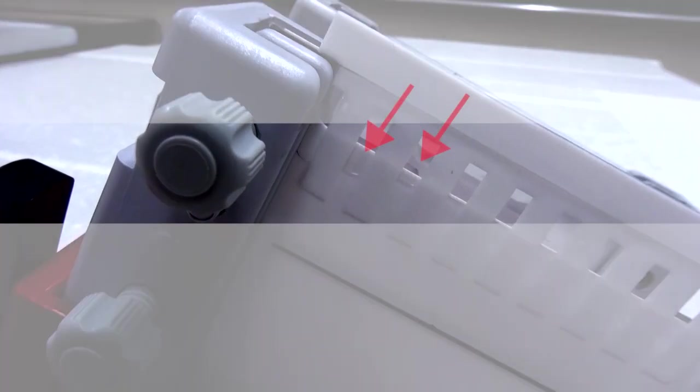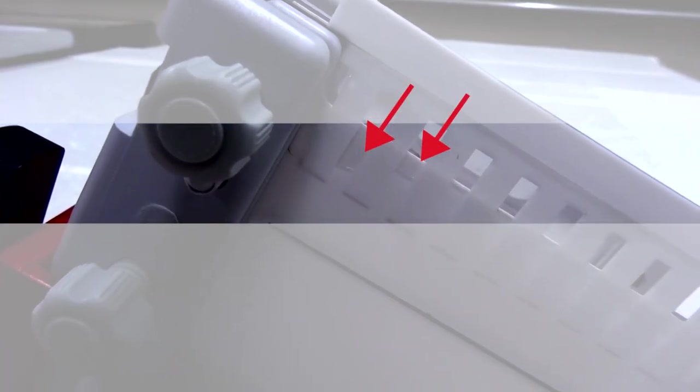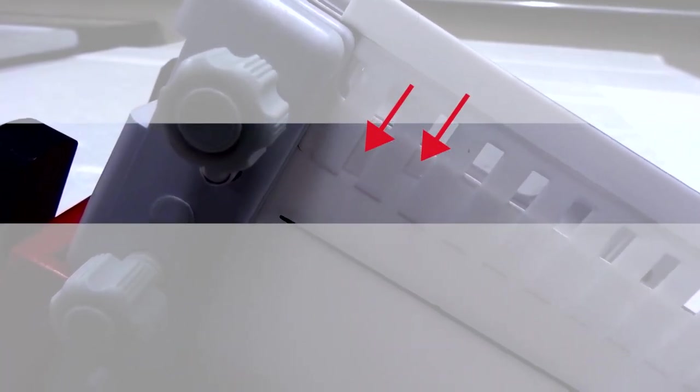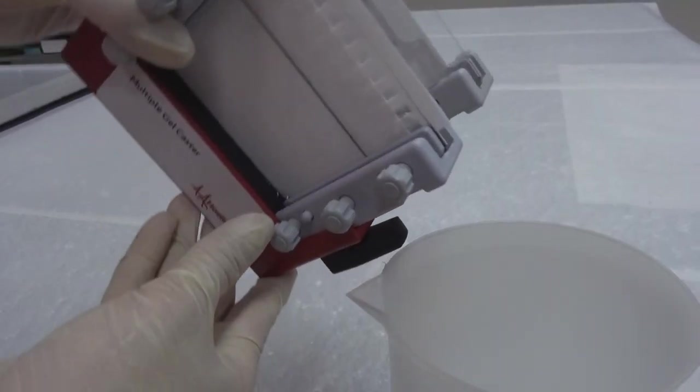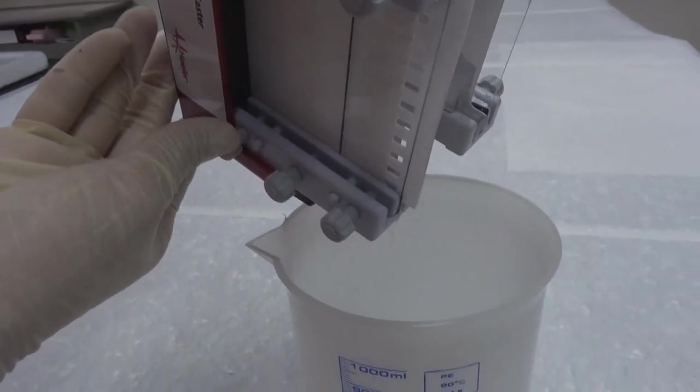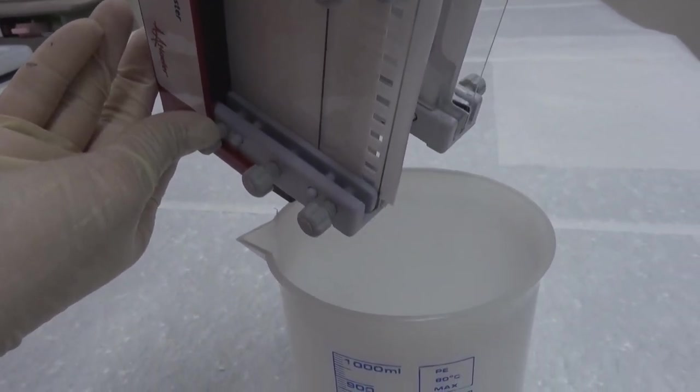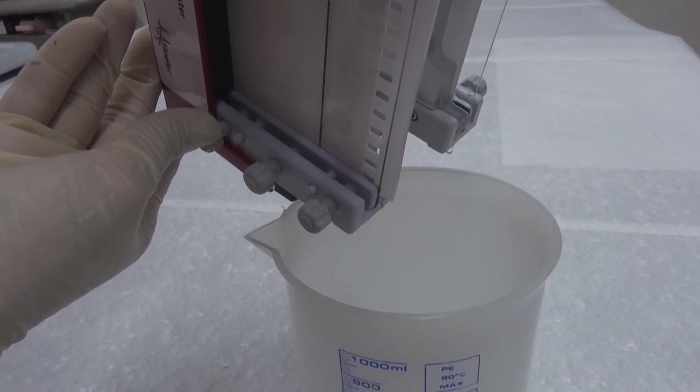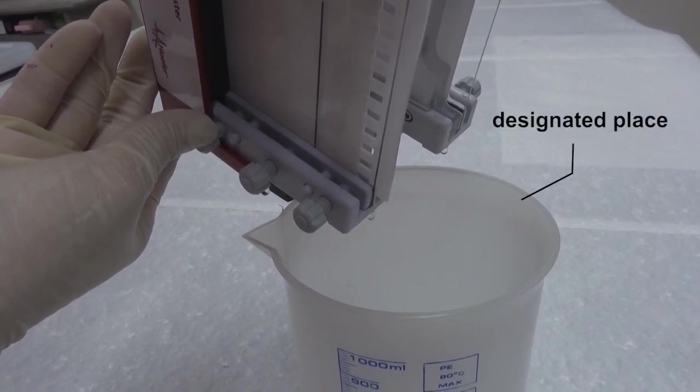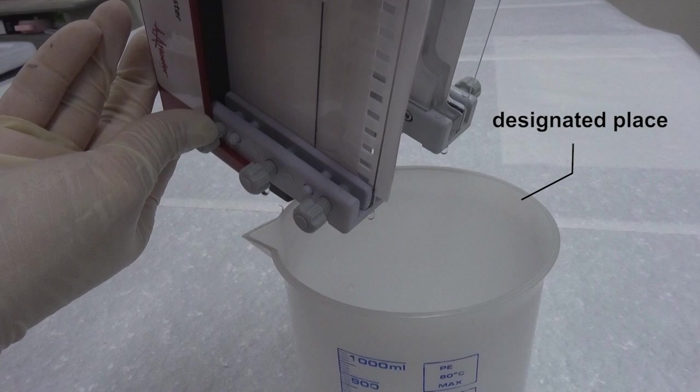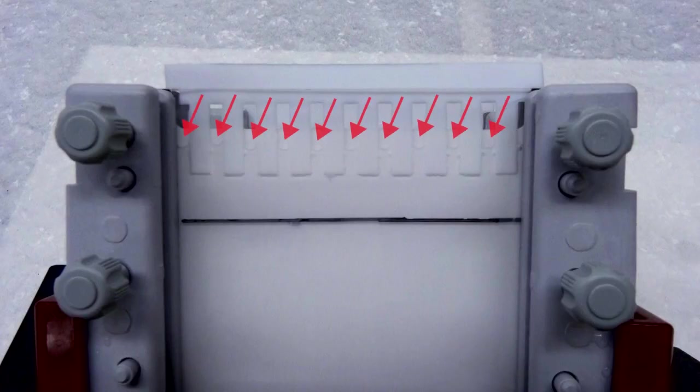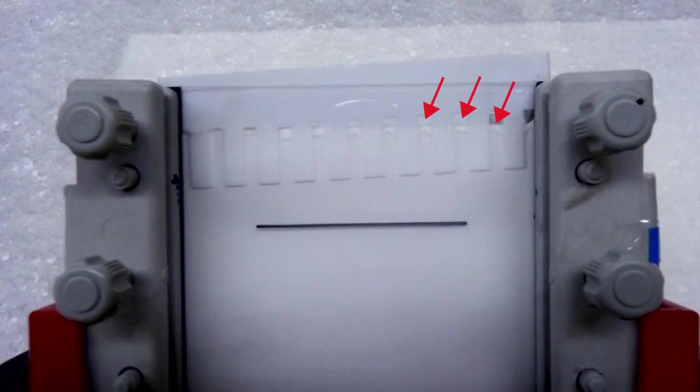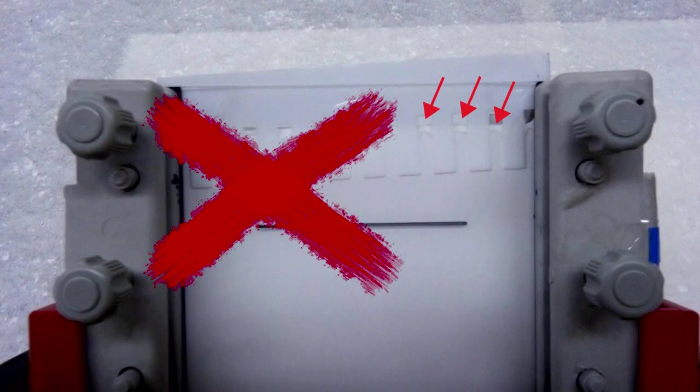If the gel surface fails to solidify, check it again after 10 minutes. If there is still no surface formation, pour away the upper layer gel solution and start over. The gel solution that has not polymerized completely is still toxic and must be disposed at designated places. If the sample wells are not intact, you may decide whether to start over based on the number and volumes of the samples.